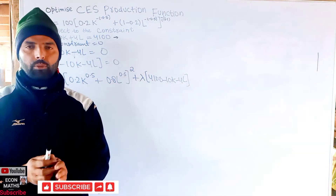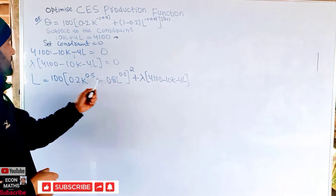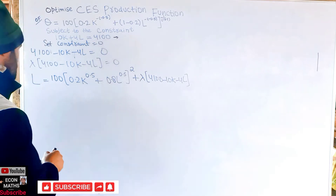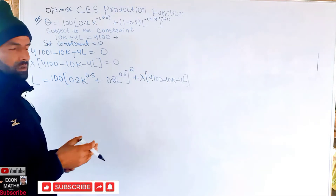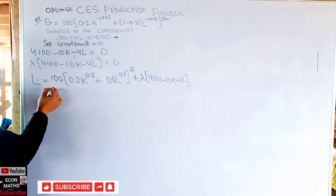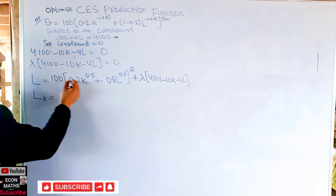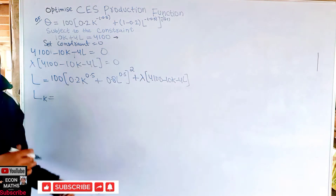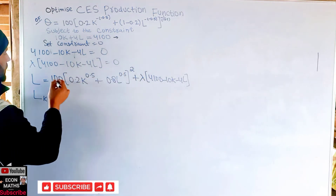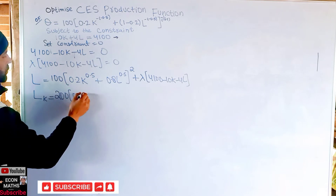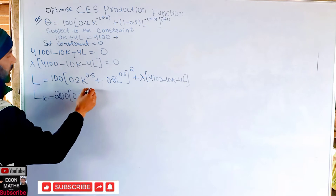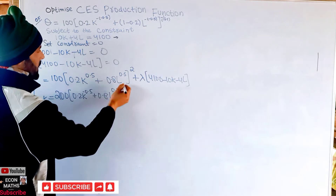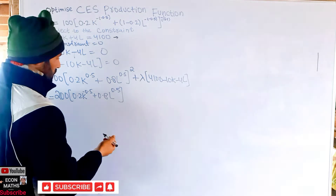To get the optimal values of K and L, we partially differentiate the Lagrangian with respect to K, L, and λ, and set each equal to zero simultaneously. Differentiating with respect to K: by the power function rule, the exponent 2 becomes the coefficient, giving 2 × 100 = 200, times (0.2 K^(0.5) + 0.8 L^(0.5))^1.